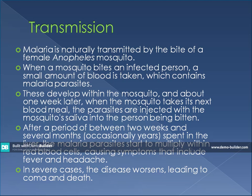Malaria is naturally transmitted by the bite of a female Anopheles mosquito. When a mosquito bites an infected person and takes a small amount of their blood, and if that blood contains the Plasmodium parasites, the parasite develops within the mosquito. In about one week, when the mosquito takes its next blood meal, the parasites are injected through the mosquito's saliva into the person being bitten. This means mosquitoes may not initially have the parasite, but once they bite someone with the infection, the Plasmodium parasites move to the mosquito's salivary glands and are transmitted to the next person bitten.